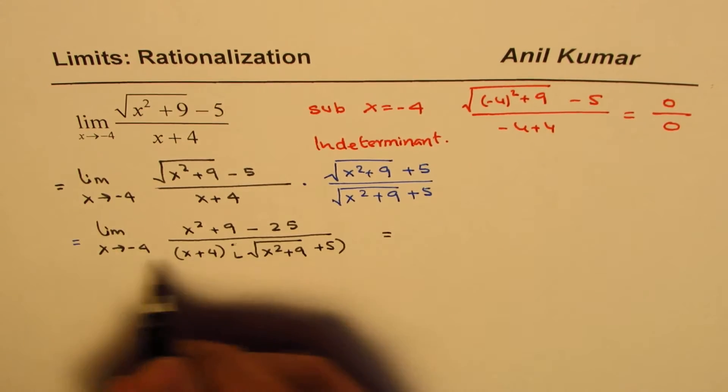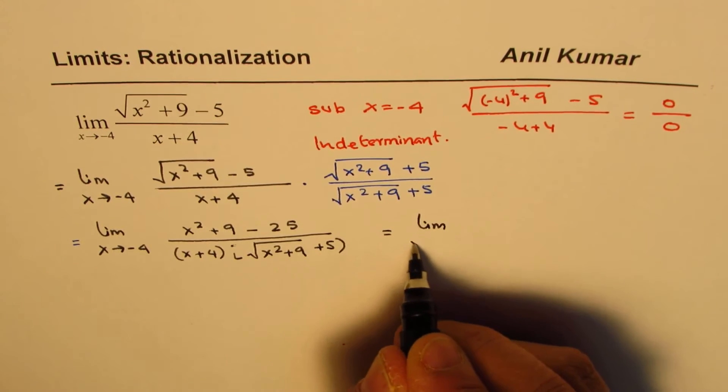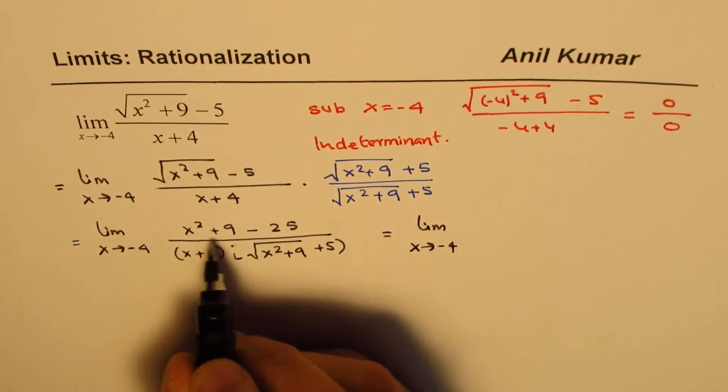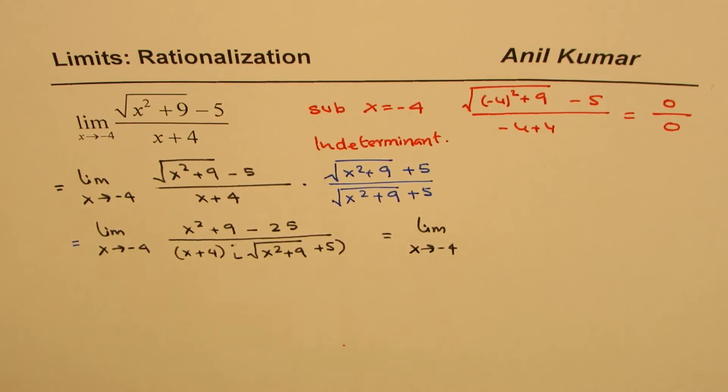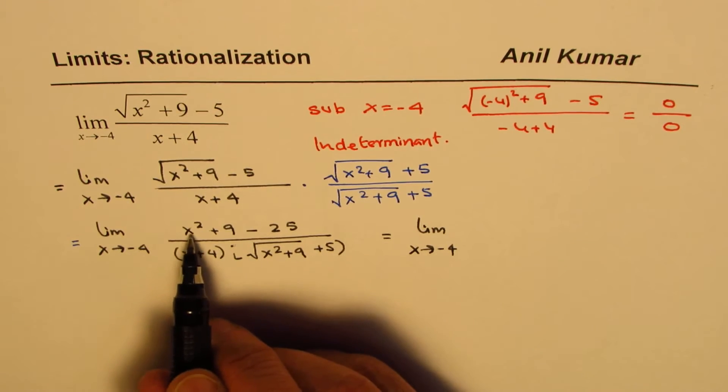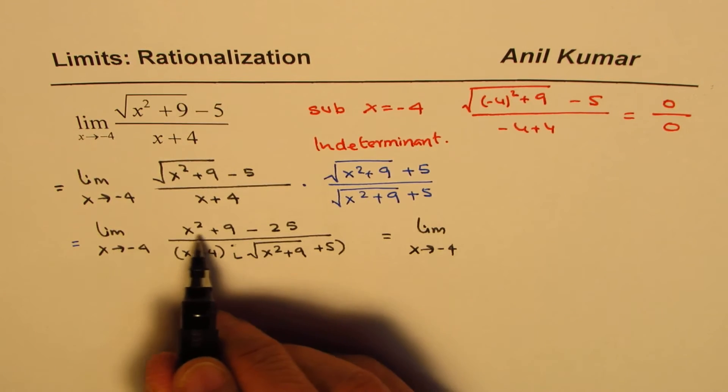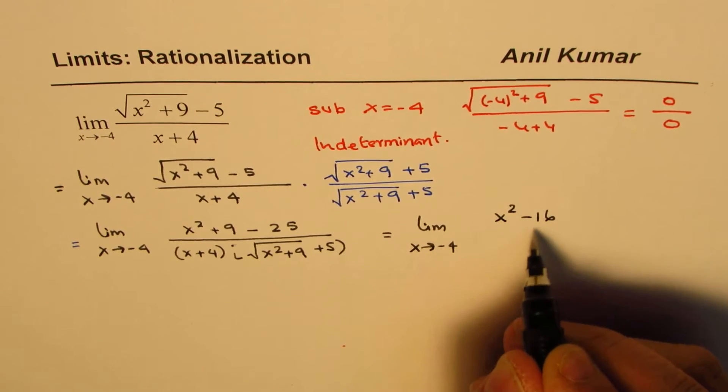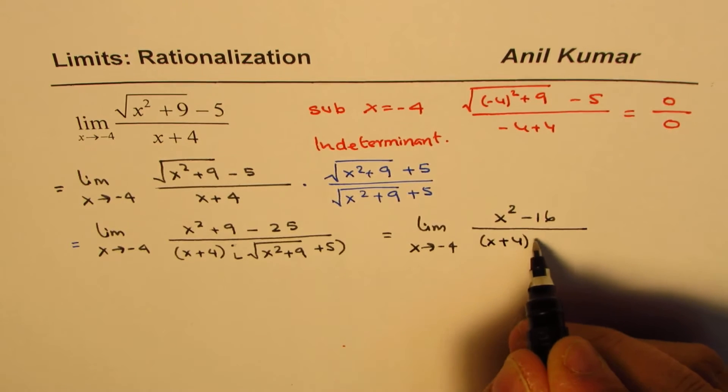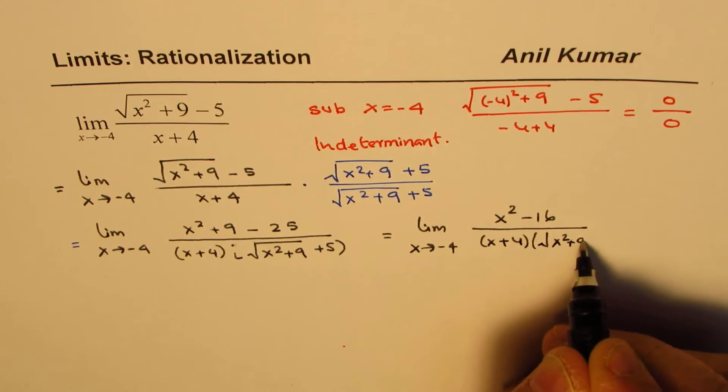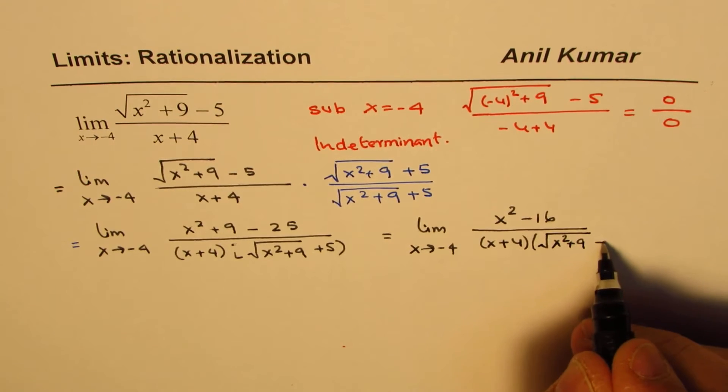So we have limit as x approaches minus 4. The numerator x² minus 16 can be factored as a difference of squares. So we have (x+4) in the denominator times √(x²+9) plus 5.